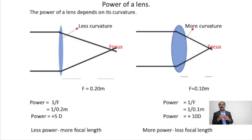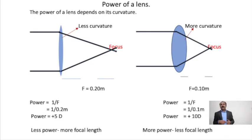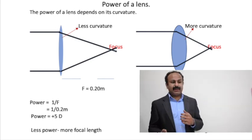In the second diagram, it's a thick lens with more curvature, so its power will be more. Looking at the ray diagram, the light is converged more, which is why its focal length is less — 10 cm instead of 20 cm. So a lens with more power converges light rays more. The power of the second convex lens is 1/0.1 = +10 diopters. In summary: more power means less focal length; less power means more focal length. The power of a convex lens is positive and the power of a concave lens is negative.